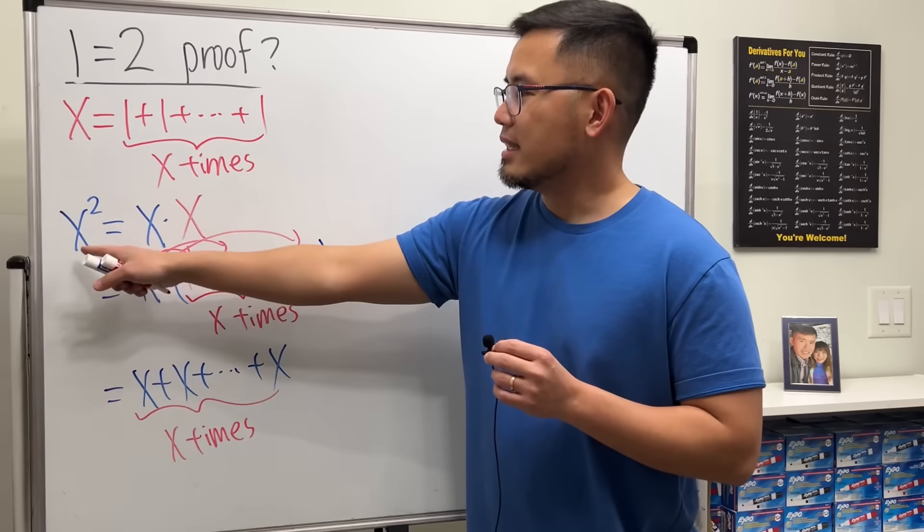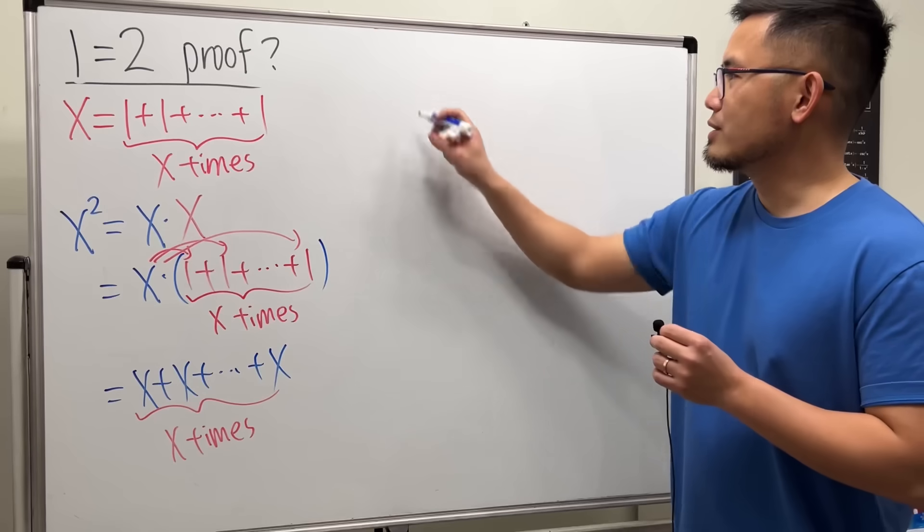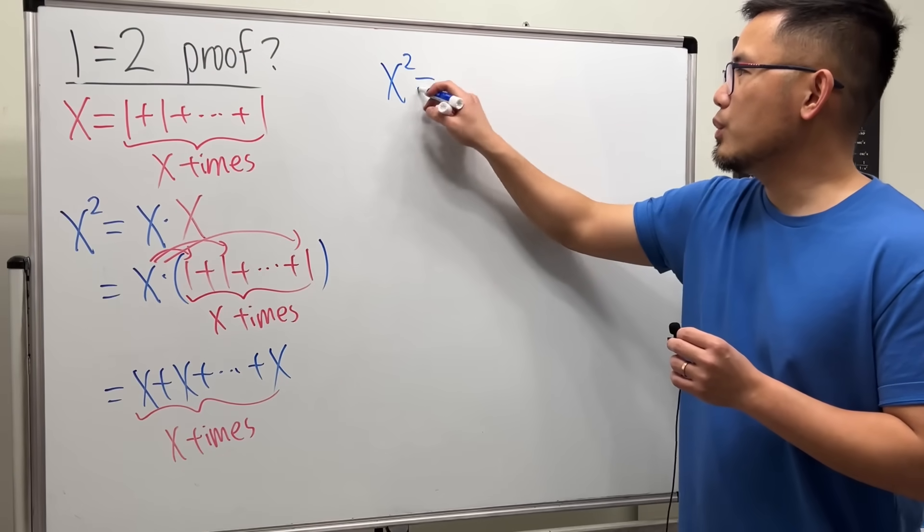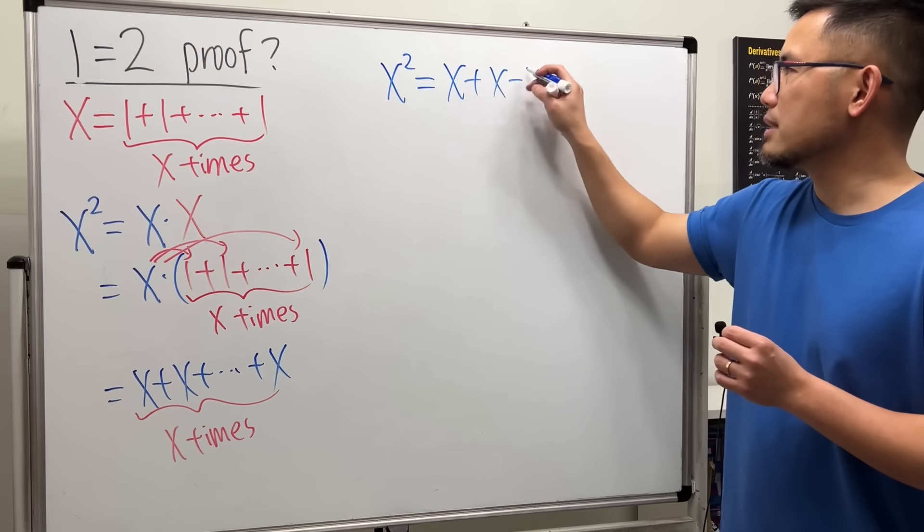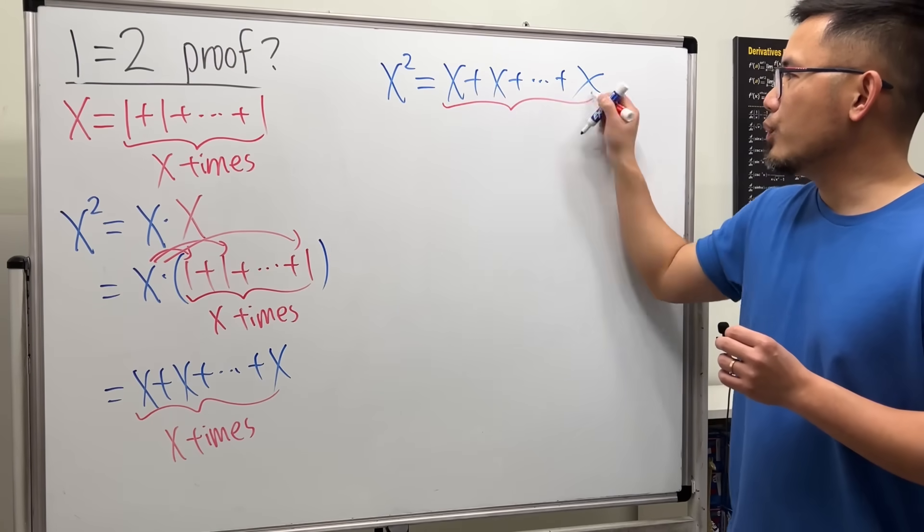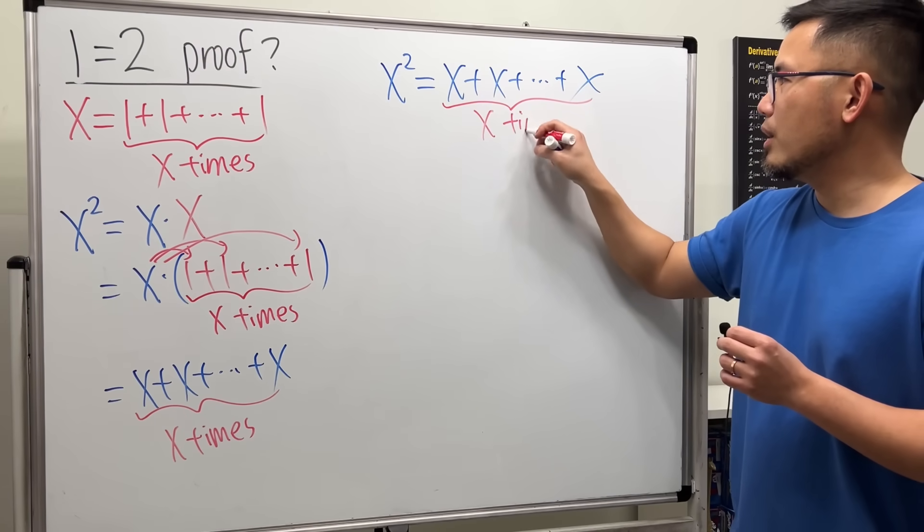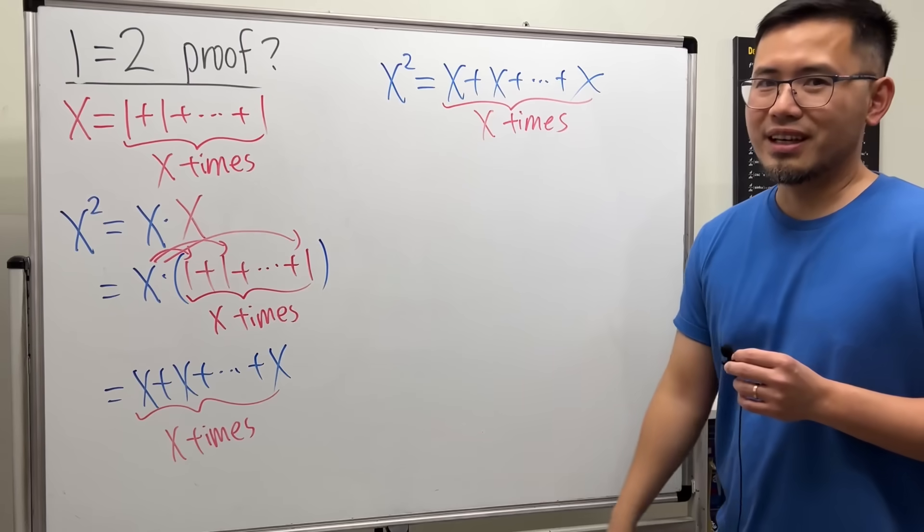So we are saying that X squared is just all this. So let me put that down: X squared equals X plus X plus up to X, and again we have X many X's. We wrote down X X times.